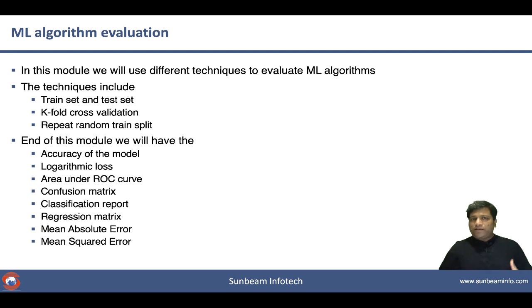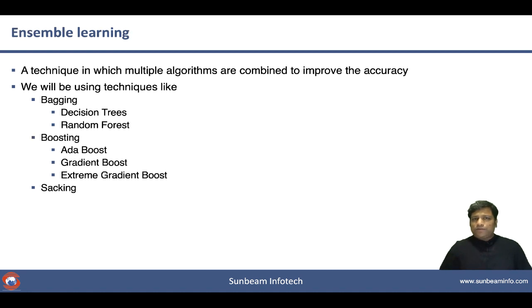With these criteria, we are going to understand how well our model is behaving, what is the accuracy of your model, and based on that we can decide whether to go with this model or whether to improve the model. Sometimes it is required to improve the accuracy. How will you improve it? To improve the accuracy, you might combine different algorithms together with a technique called ensemble learning. We are going to learn decision trees, random forest like bagging technique, and AdaBoost, gradient boost, and extreme gradient boost, XGBoost like boosting techniques.